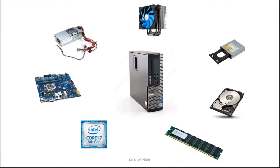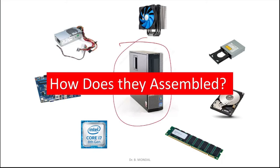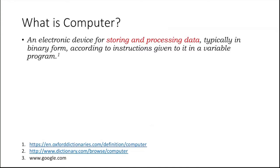The question is how those things are connected and how they help and communicate with each other — how they assemble together in this box. Before we go for all these things, we need to know what a computer is and what the basic functions of a computer are. Then automatically we will be able to imagine the sequence of connecting all these devices. Before that, we need to know the definition of a computer.